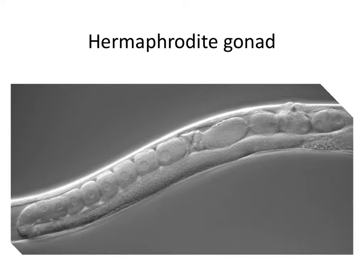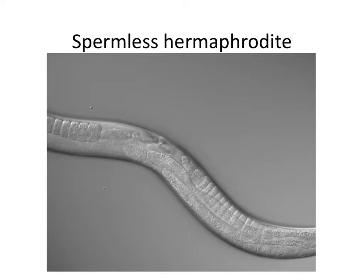Oocytes don't normally ovulate into the uterus unless there are sperm present, because sperm make chemical cues that stimulate ovulation. When the hermaphrodite starts running out of her own sperm — since she made a finite amount — she starts ovulating less frequently. When a hermaphrodite runs out of sperm, those big fat oocytes start to pile up and compress against each other in the gonad: the 'stacking oocytes' phenotype. They're not being ovulated, just piling up inside the gonad.